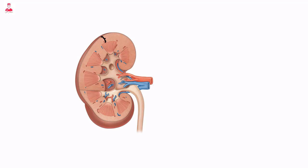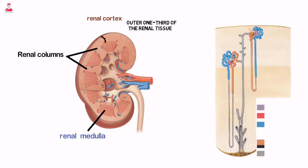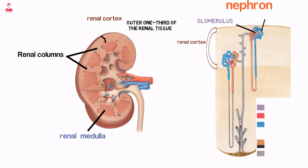Each kidney is composed of an outer cortex and an inner medulla. The renal cortex comprises the outer one-third of the renal tissue. The cortex contains the functional subunit of the kidney, the nephron, which consists of the glomerulus and convoluted tubules, and is responsible for filtration of urine.